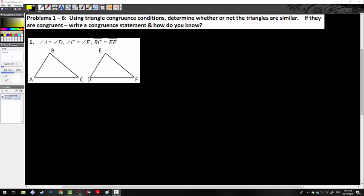All right, here comes the first of several problems off of our final review packet. We are going to be looking at a few problems from each section, and then we will continue our quest to review for the final. So problems one through six were in the first section, using triangular congruence conditions, determine whether or not the triangles are similar. If they are congruent, write a congruent statement and how do you know.